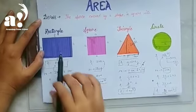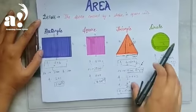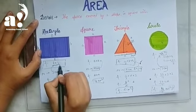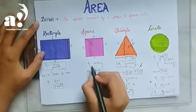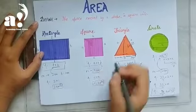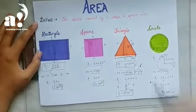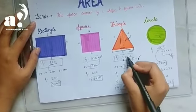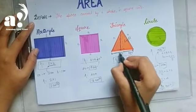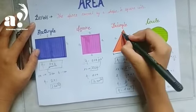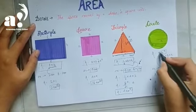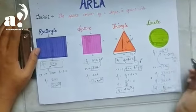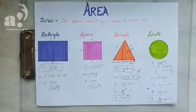So students, in this video we learned how to find the area of 4 different shapes. First, the rectangle: area = length × breadth. Second, the square: area = a × a, or a². Third, the triangle: area = ½ × base × height. Fourth, the circle: area = πr², where r² means r × r. Hope you will practice at home. Thank you.